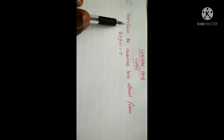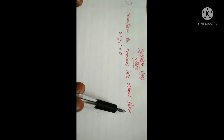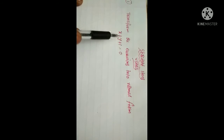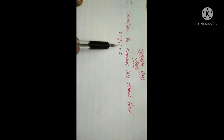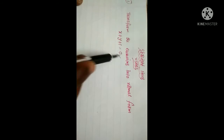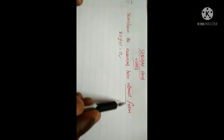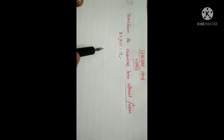First question: transform the equation into normal form. The equation given is x plus y plus 1 equal to 0. We need to get the equation of a straight line in normal form.